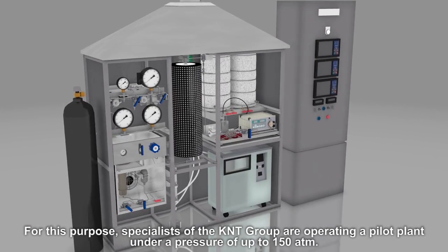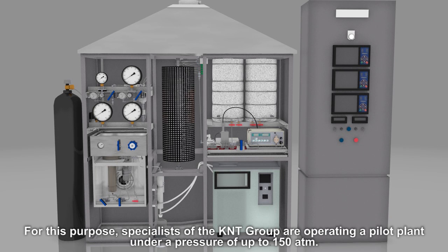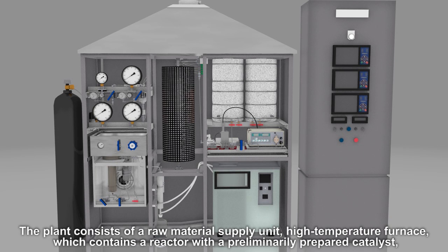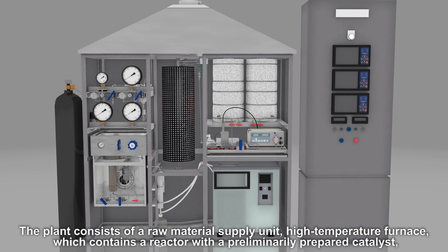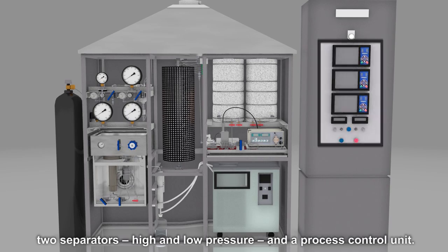For this purpose, specialists of the KNT Group are operating a pilot plant under a pressure of up to 150 atmospheres. The plant consists of a raw material supply unit, high-temperature furnace, which contains a reactor with a preliminarily prepared catalyst, two separators, high and low pressure, and a process control unit.